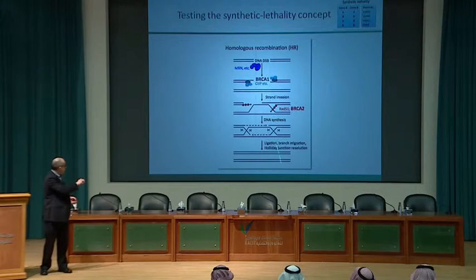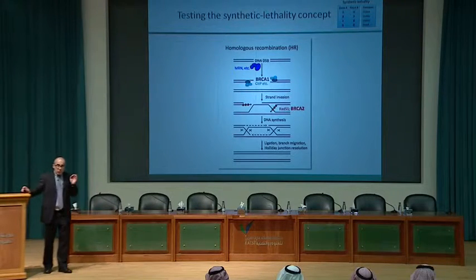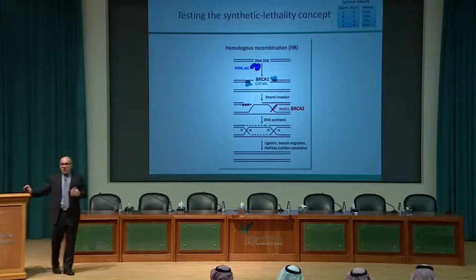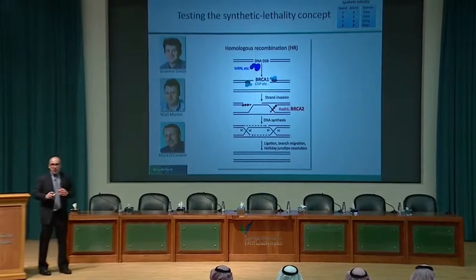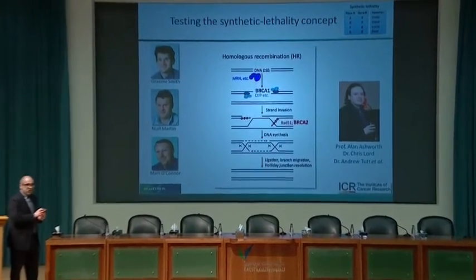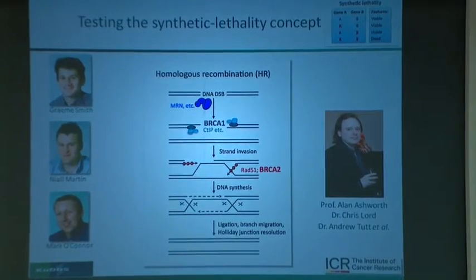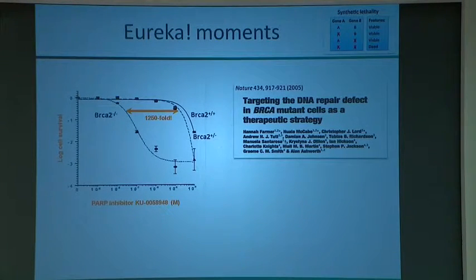Cells without BRCA1 or BRCA2 cannot effectively carry out homologous recombination. BRCA1 and BRCA2 are genes whose deficiency gives rise to breast and ovarian cancer, and now also prostate and pancreatic cancers. At this point we thought there might be opportunities for PARP inhibitors in BRCA-deficient cancers. The Kudos team collaborated with Professor Alan Ashworth in London, and we tested in his cellular models whether PARP inhibitors showed potential.